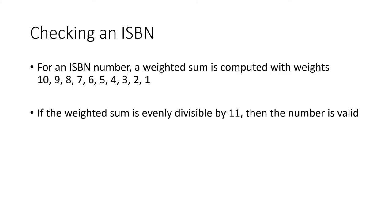To validate an ISBN, we create a weighted sum with weights 10, 9, 8, 7, 6, 5, 4, 3, 2, 1. The criteria is that the weighted sum should be evenly divisible by 11. That's a little unusual — the patterns from the previous lecture all had to end in zero, but this time it has to be evenly divisible by 11.